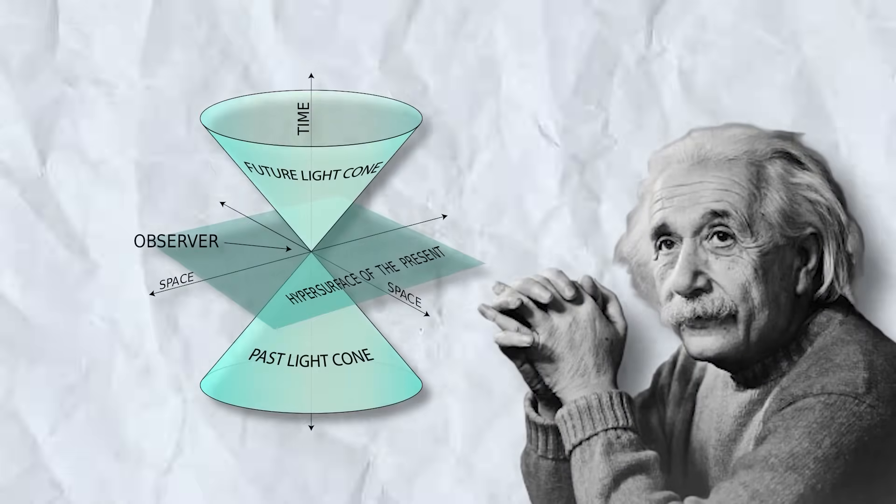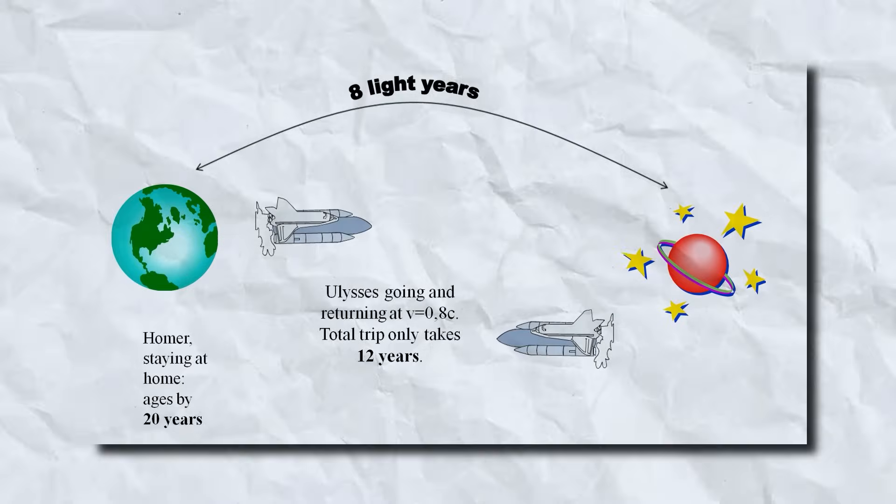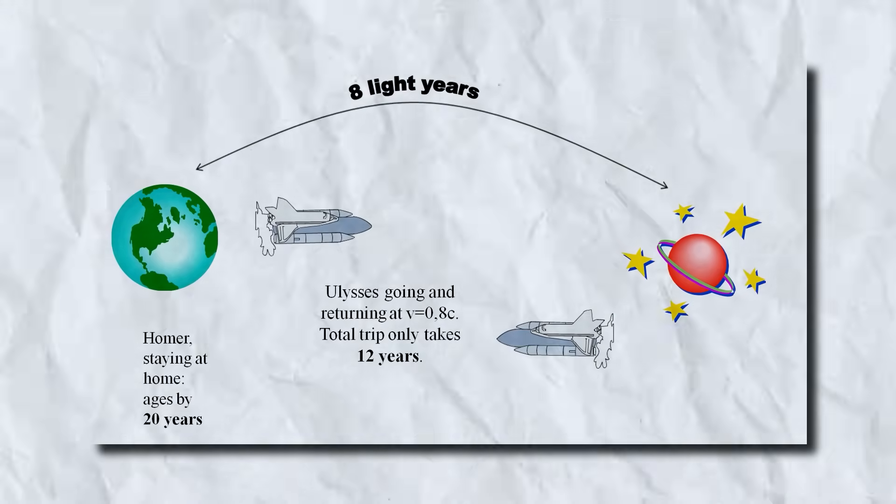Did you know that according to Einstein's theory of relativity, as an object approaches the speed of light, time for that object appears to slow down from the perspective of an observer at rest.